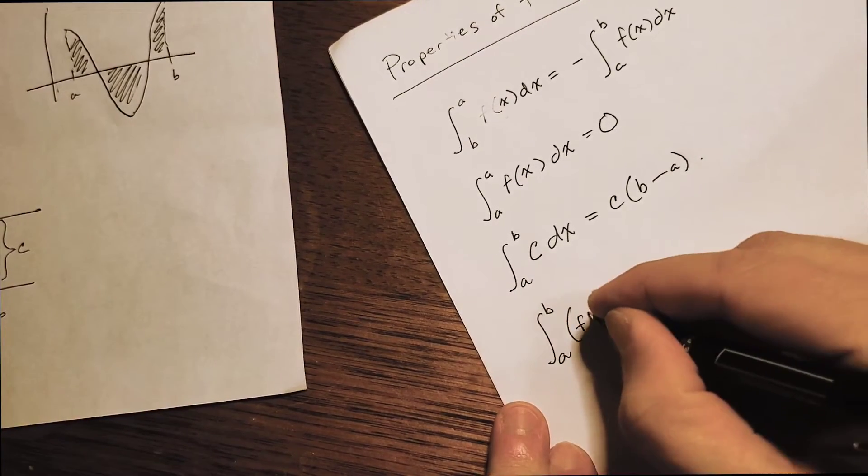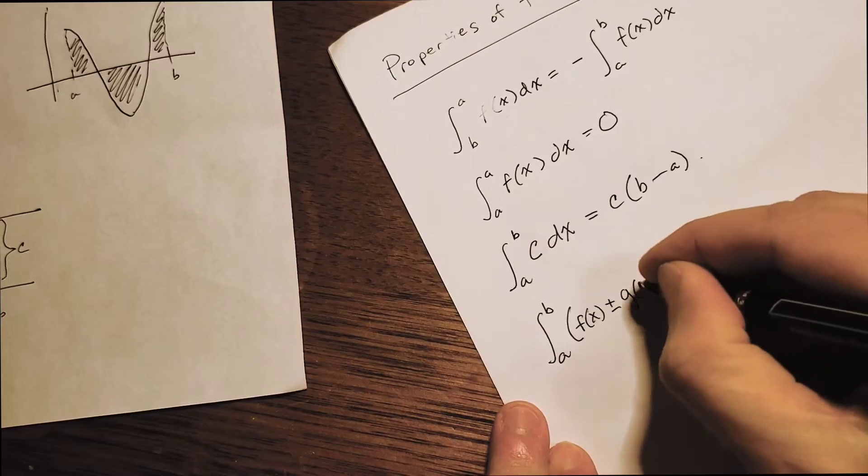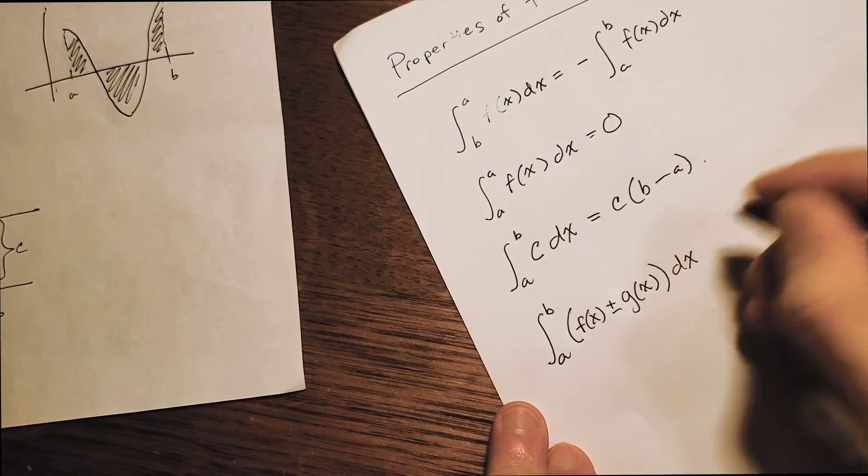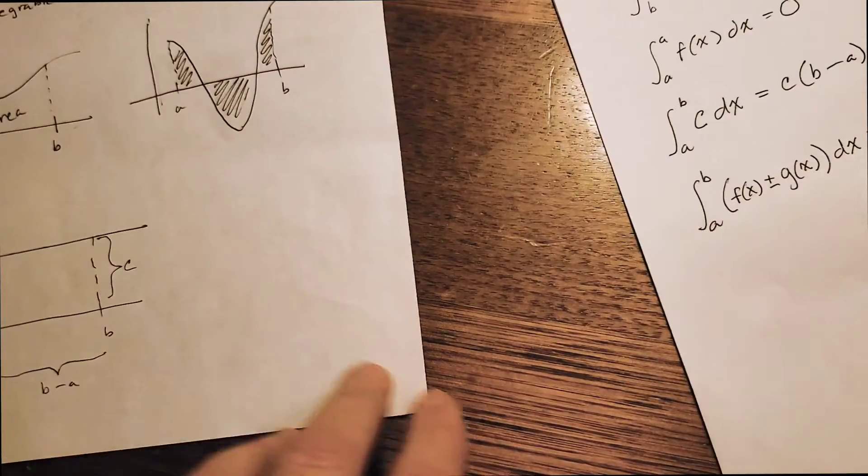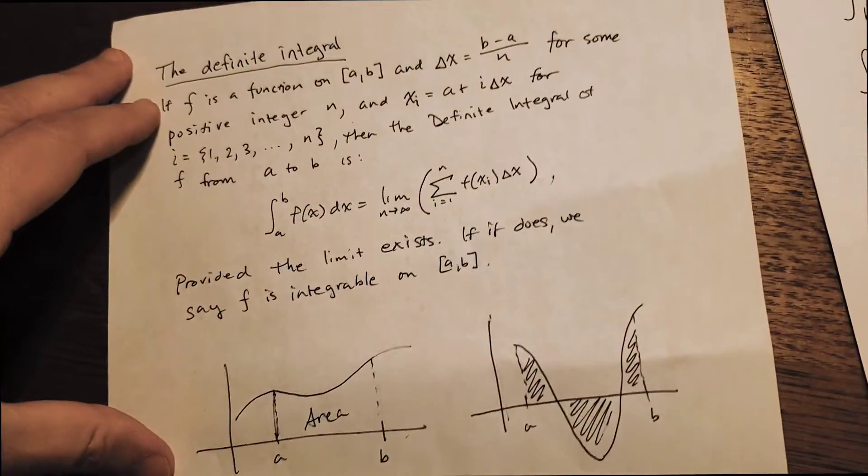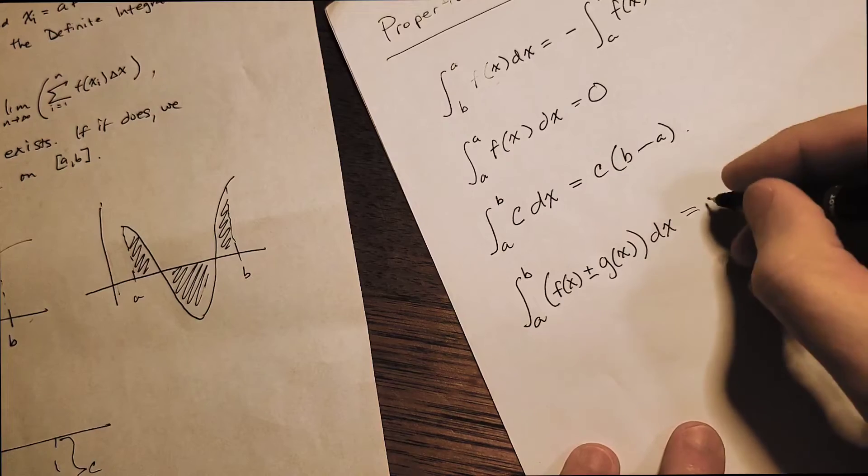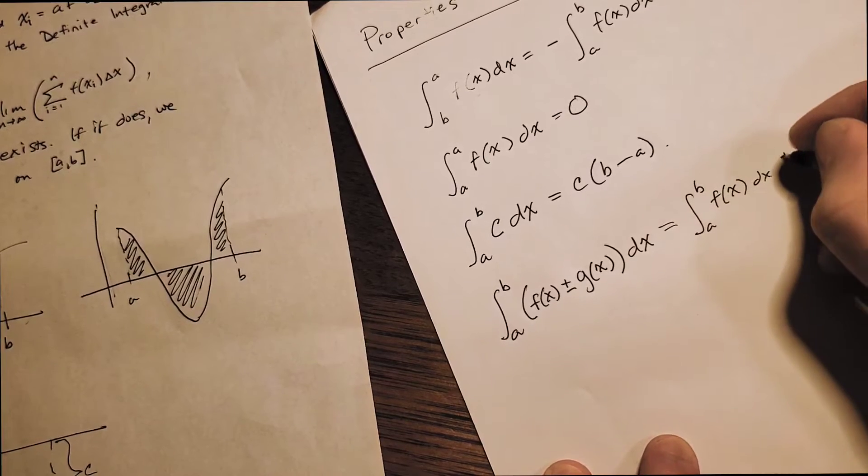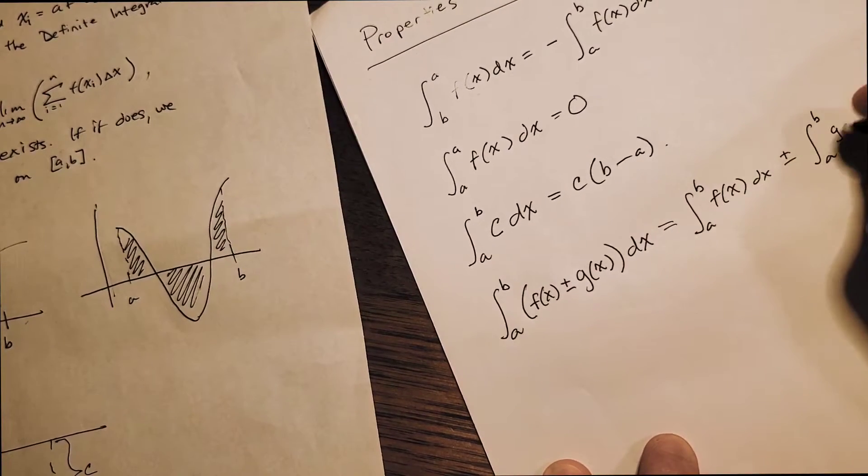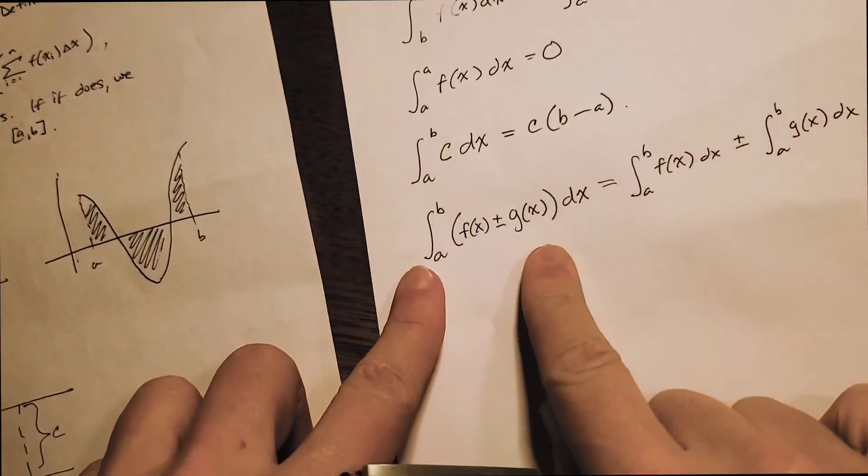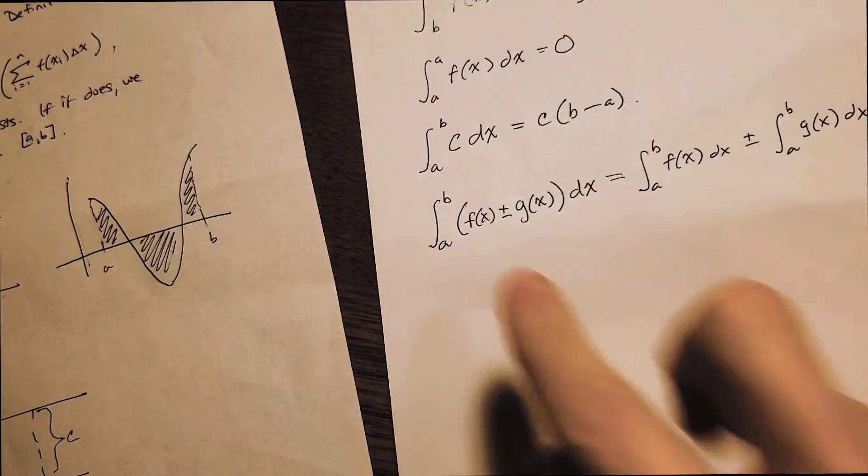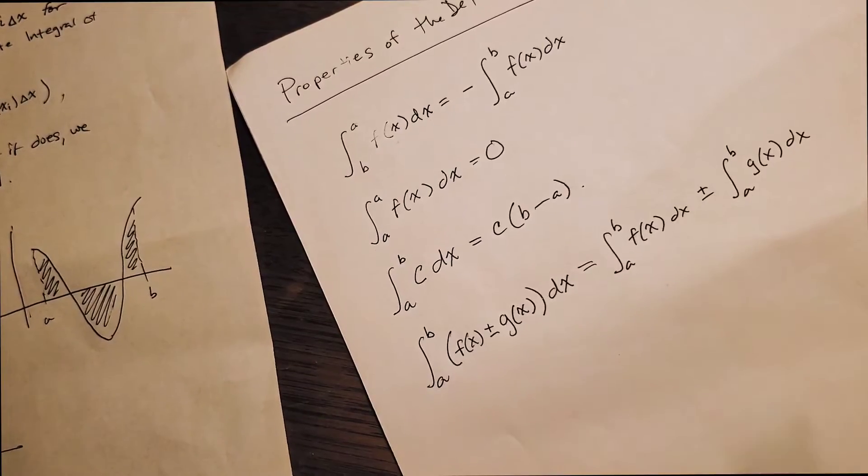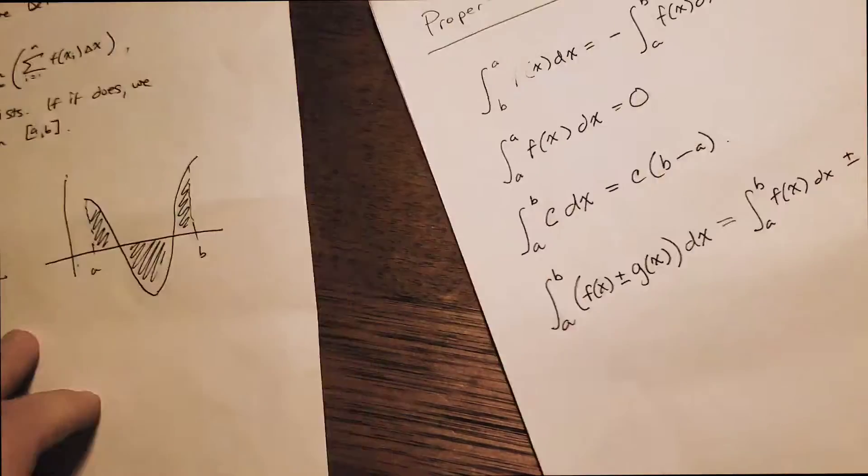Suppose we create a new function by adding or subtracting two functions together. So I want to think geometrically and algebraically about this. So first algebraically, let me just write what the result is, and then we'll talk about it. So what we can do is take each integral separately and then add or subtract the two integrals together. So this side is we're creating a new function by adding or subtracting two functions and taking the integral of this new function. Here we do the two integrals of the original function separately and then add or subtract those two integrals together.